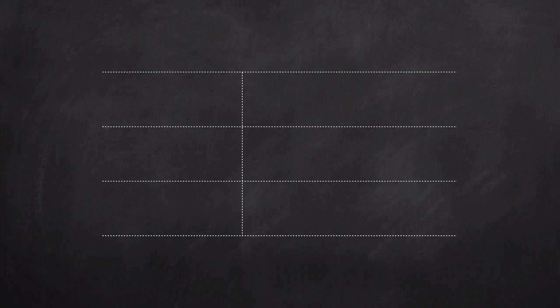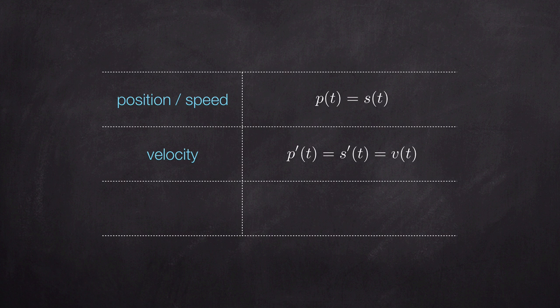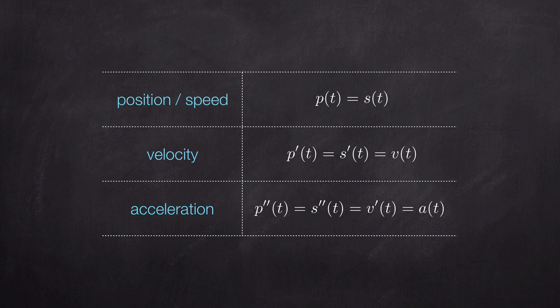Given a function that models position or speed over time — so p(t) or s(t) — its derivative is a function that models velocity over time. So p′(t) or s′(t) is equal to v(t). The derivative of the velocity function models acceleration, so v′(t) equals a(t). We can also say that acceleration is the second derivative of position or speed: p″(t) or s″(t).